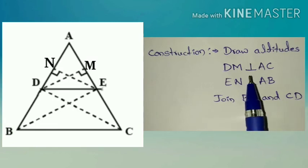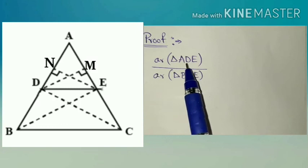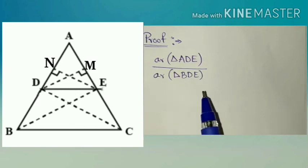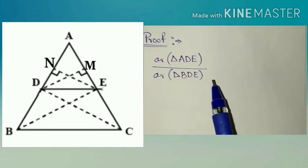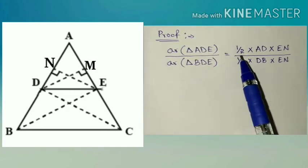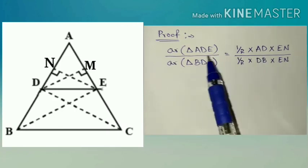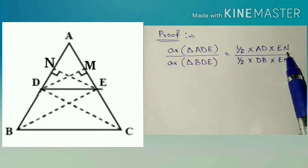By drawing the perpendiculars here we can get the ratio of the areas of those triangles. In proof we have to take here ratio of areas of triangle ADE and area of triangle BDE. Both having the same height or altitude you can say it as EN.